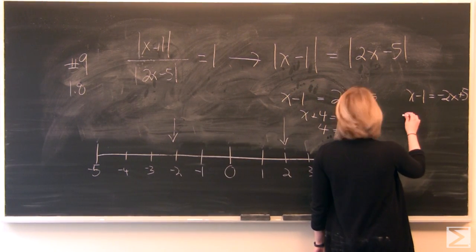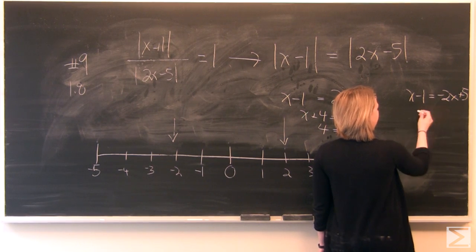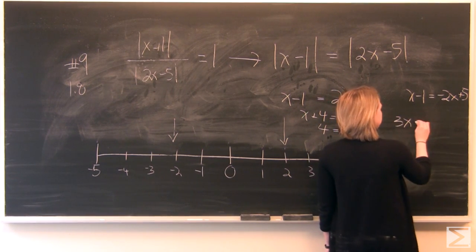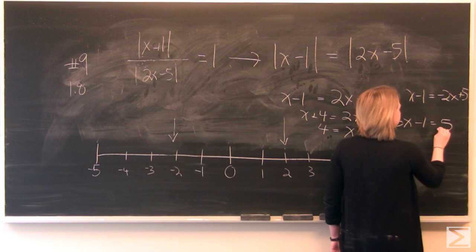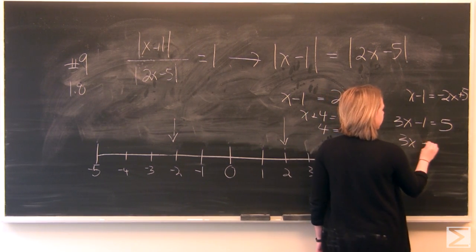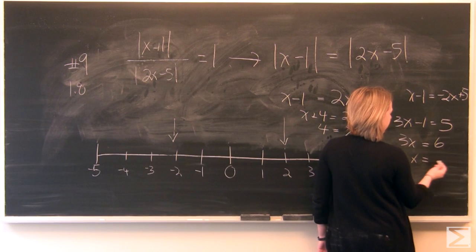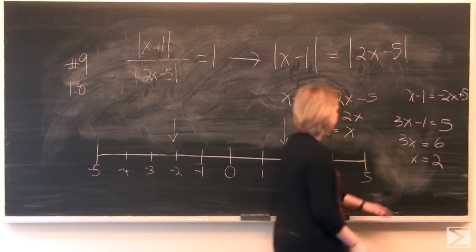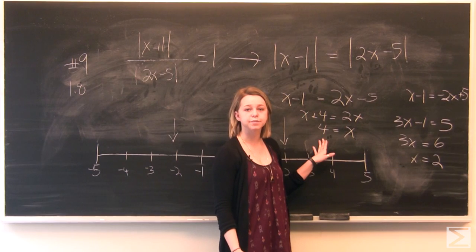For the second equation, adding 2x to both sides gives 3x minus 1 equals 5, then 3x equals 6, so x equals 2. We now have our two solutions for x in this equation: x equals 4 and x equals 2.